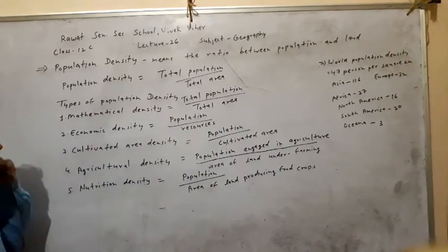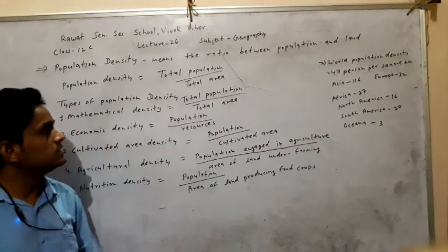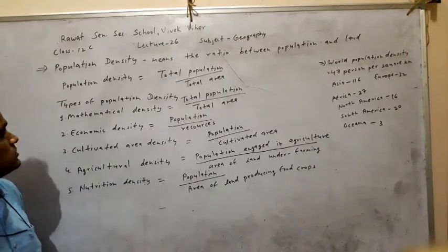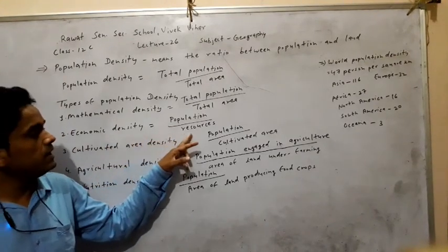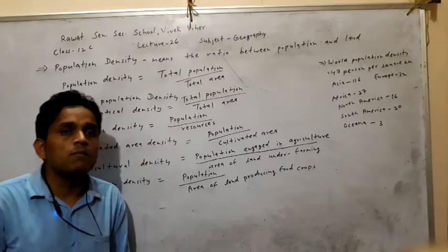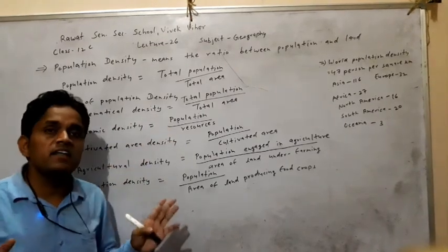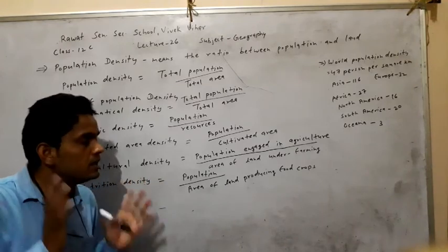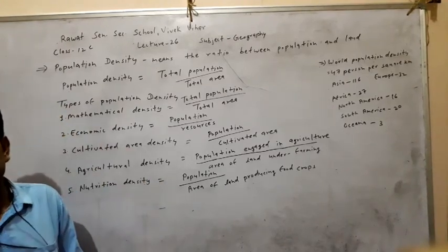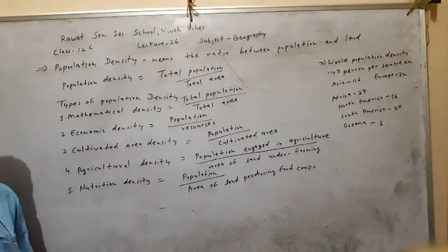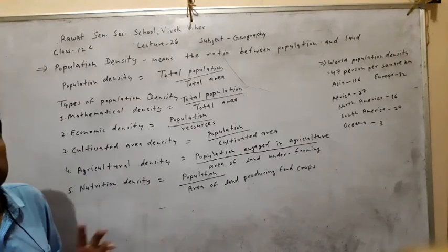Second type: economic density. Economic density is population divided by resources. Here we study the ratio between the total population and the resources found in a particular region. That is called economic density — the ratio of population and the productive capacity of resources.